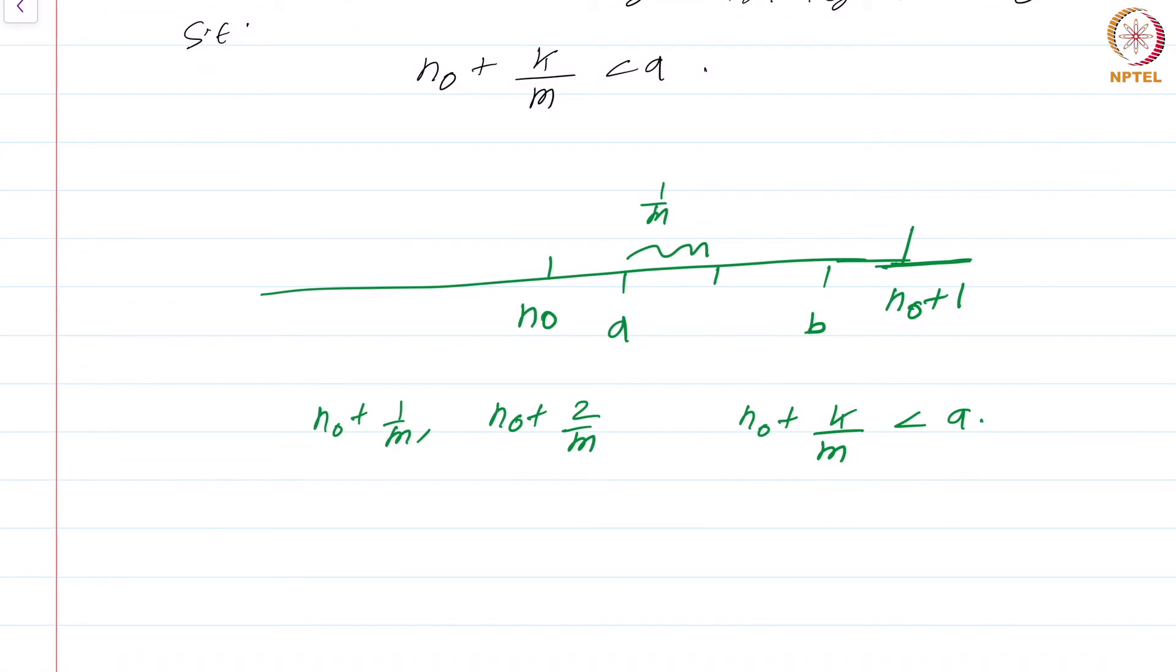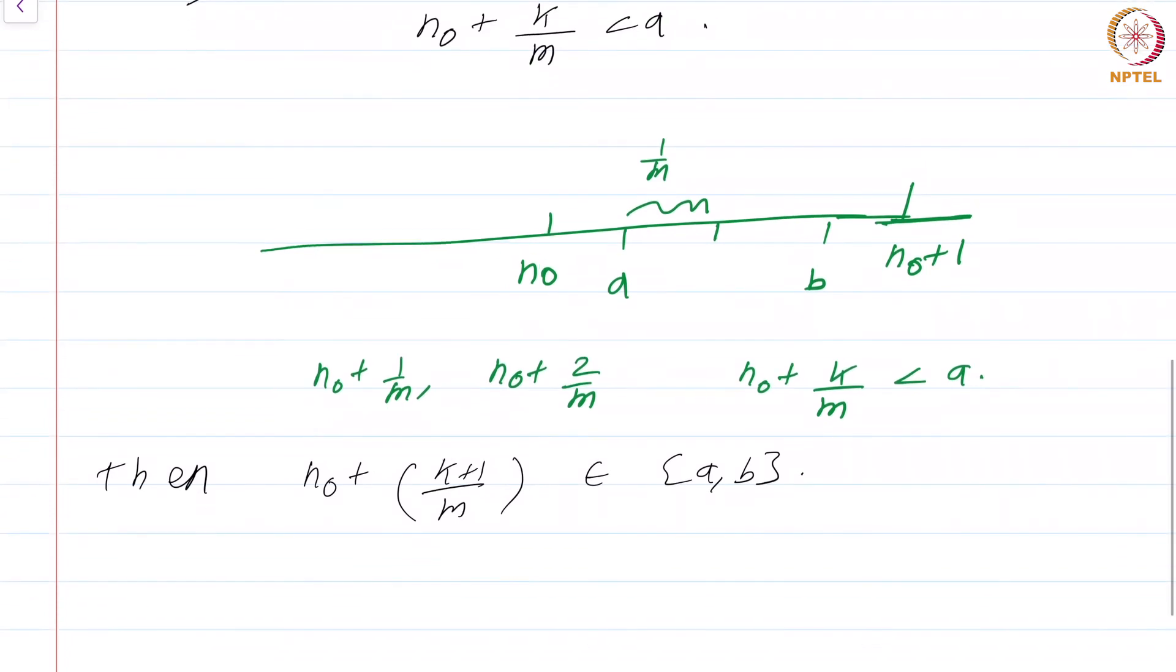Now, n_0 + k/m is less than a, that means n_0 + (k+1)/m will necessarily have to belong to (a,b). Why is this the case? Because n_0 + k/m is less than a, and 1/m is less than (b-a)/2. So adding (b-a)/2 to something less than a cannot exceed b, simply because the length of the interval (a,b) is b-a and 1/m is less than (b-a)/2.